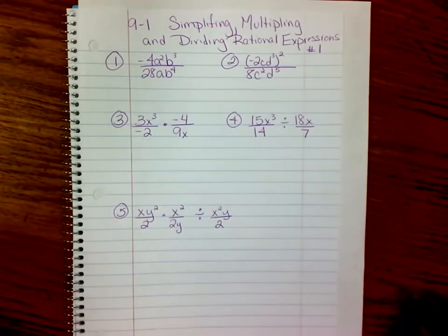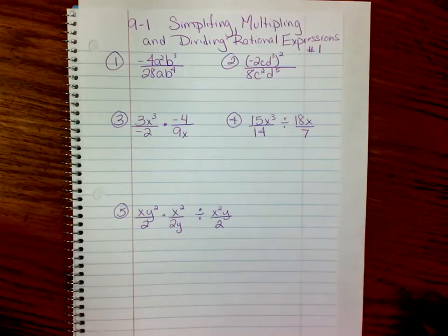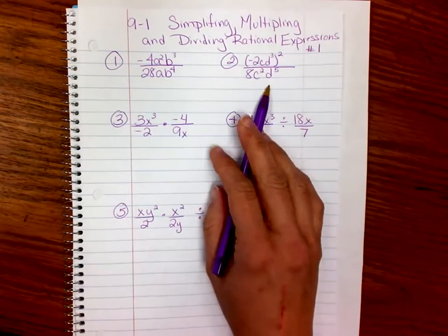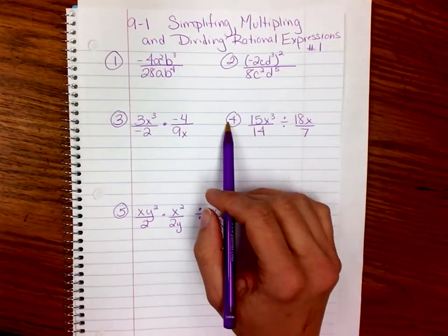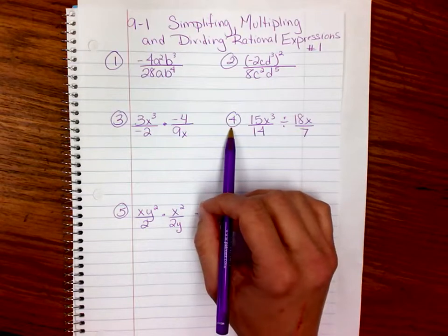We're going to simplify some rational expressions, and we're also going to multiply and divide some simple rational expressions. When you're simplifying, you just have one fraction, and you have to keep in mind that you can only cancel factors.